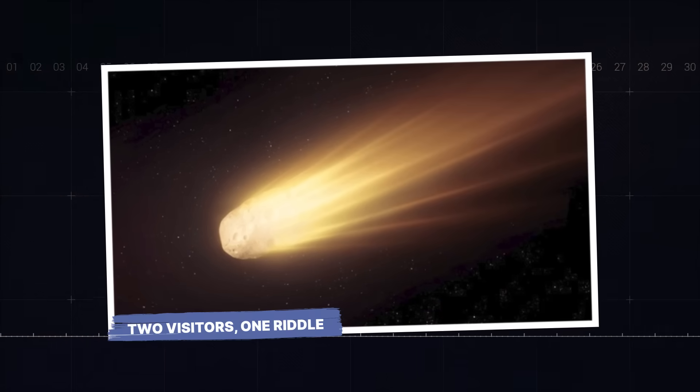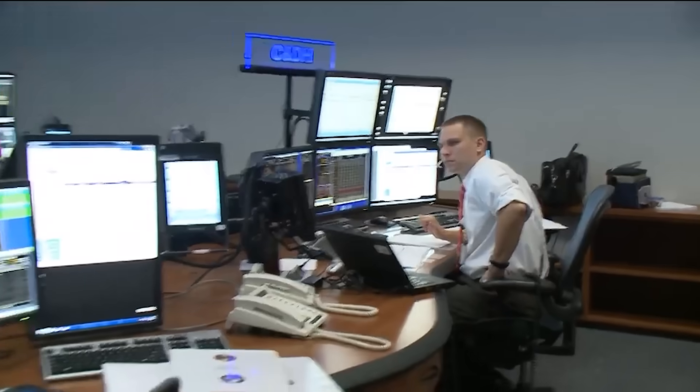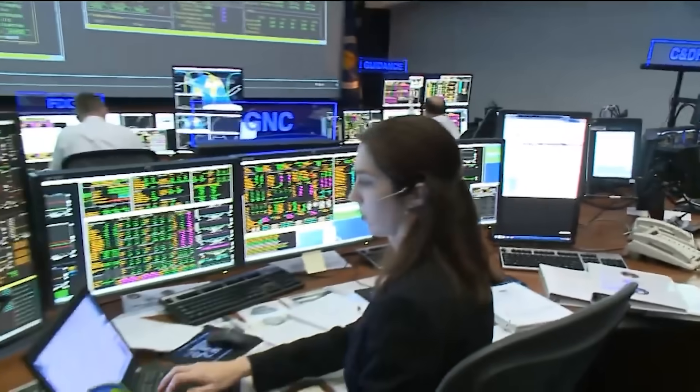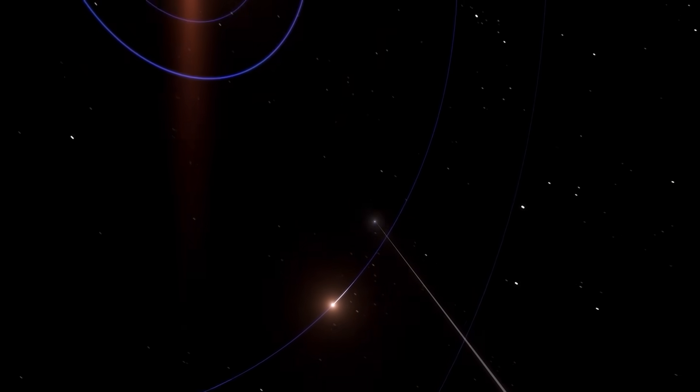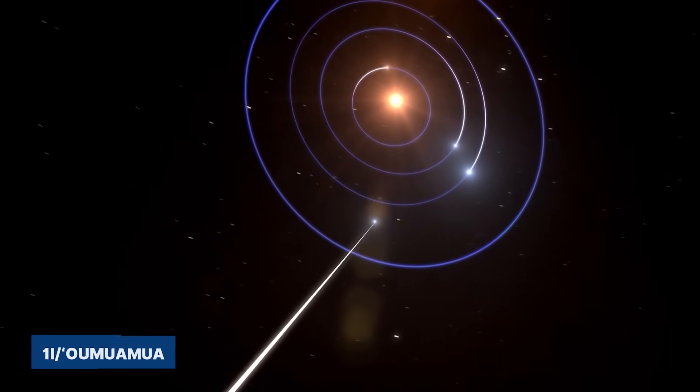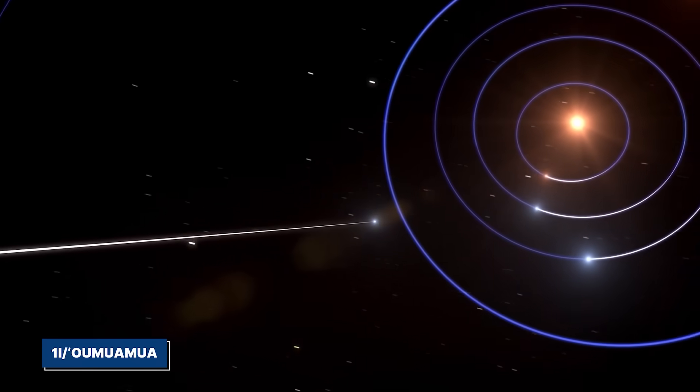Two visitors, one riddle. For anyone in the astronomical community, the strange behavior of 3i Atlas set off a deafening echo of a mystery from 2017. That was the year the first interstellar object, Oumuamua, tumbled through our solar system.